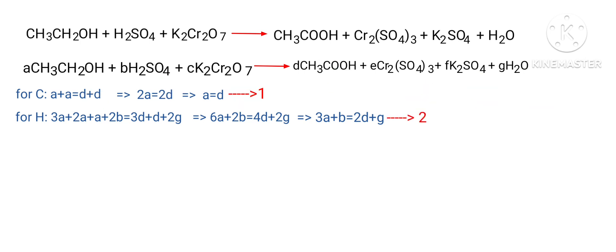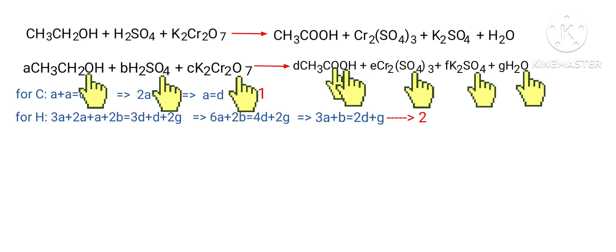For Oxygen: A plus 4B plus 7C equals 2D plus 2E plus 4F plus G. (Equation 3)